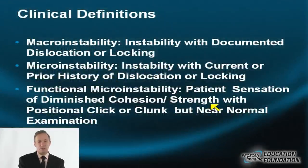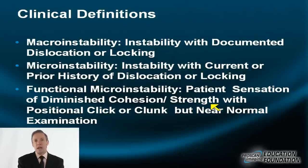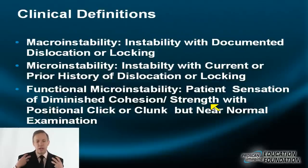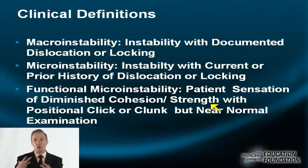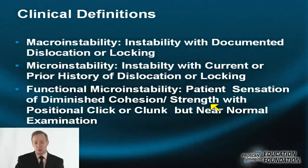Back to some clinical definitions. Macro-instability is instability with documented dislocation or locking. Micro-instability covers all other forms of instability without dislocation or locking. Functional micro-instability is when the patient has the sensation of diminished cohesion, strength, and power, and experiences a click or clunk — at which moment they feel their shoulder is not solidly placed within the glenoid cup — yet on physical examination there is no evidence of instability.